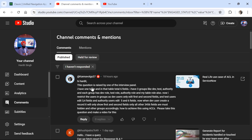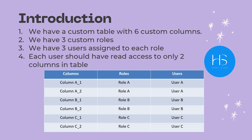This is the question which was asked on my YouTube channel, and I have broken it down in a PPT in a simpler way. The interviewer gave a scenario: you will have a custom table with 6 custom columns — column A_1, A_2, column B_1, B_2, and column C_1 and C_2. I will explain why I named these columns like this in a second.